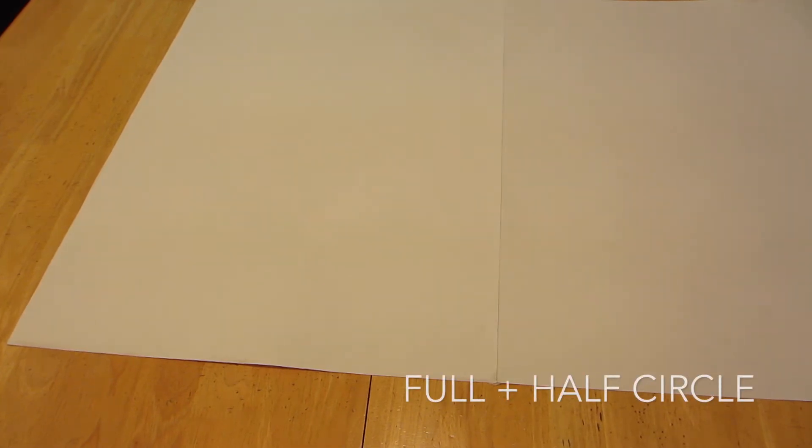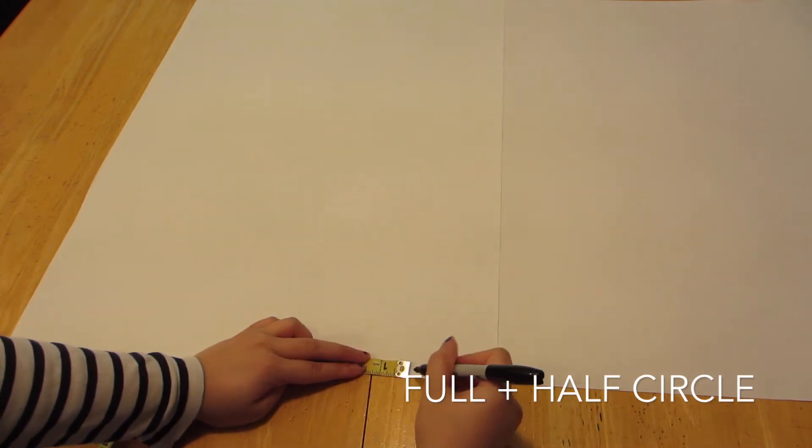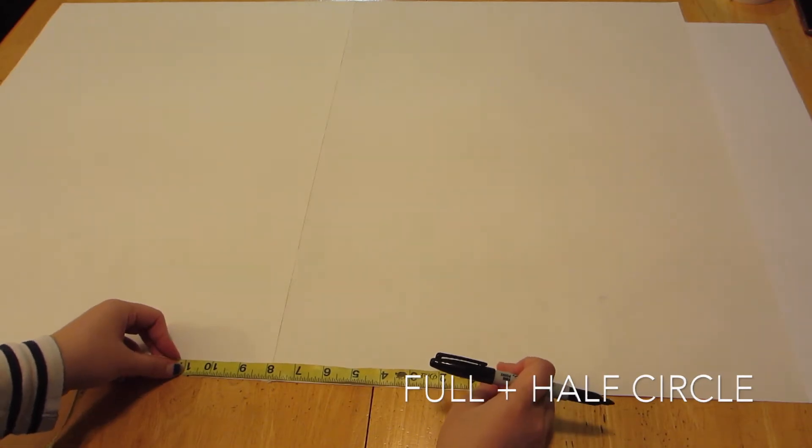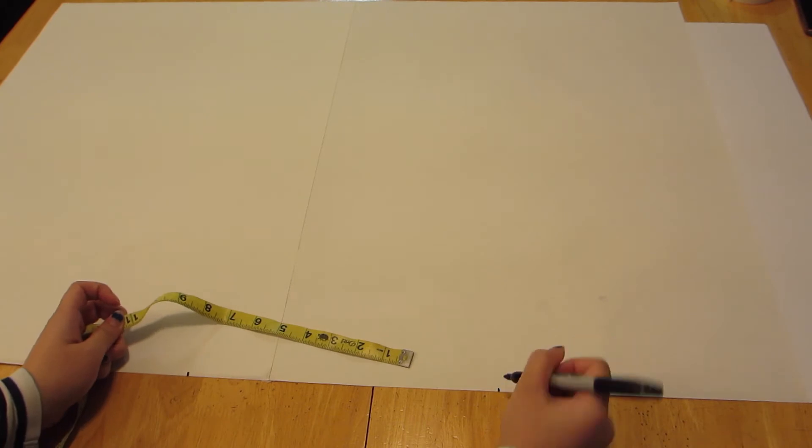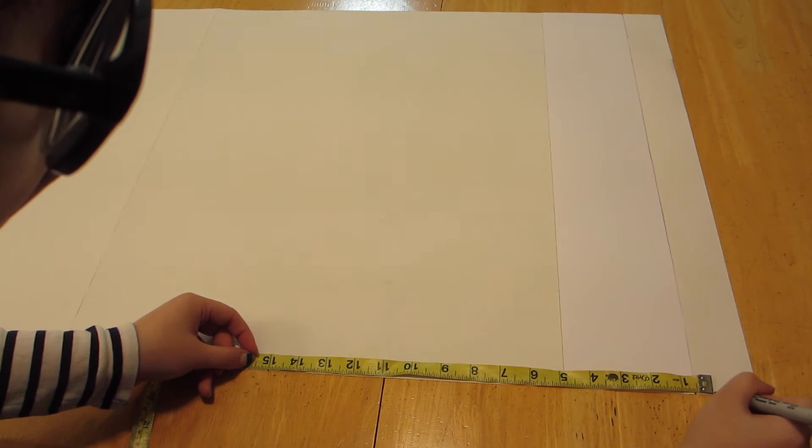To start, take your skirt length and measure it out along the edge of your paper. Then take your diameter and measure that. If you're doing a half circle, multiply your diameter by two and mark that instead. Then follow it by your desired skirt length again. The total length should match the length section under the circle you are making, give or take a few centimeters.